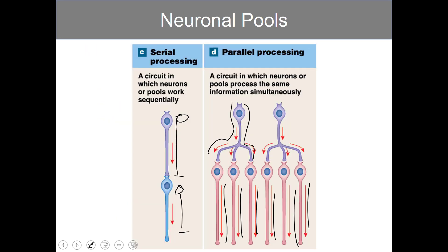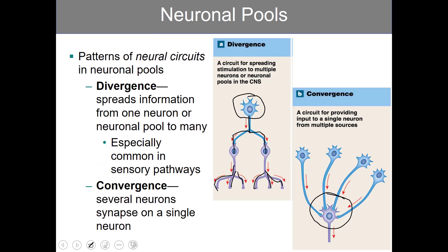In terms of significance, consider divergence: you're able to spread a single message to multiple sources from just one action potential. Or in the case of convergence, you get a lot of input converging onto one neuron. Thinking about summation, this could play to the benefit of creating either an EPSP or IPSP by having a convergent style.